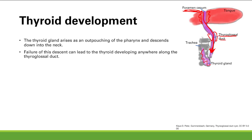The key thing about the lingual thyroid is that sometimes this can be the only thyroid tissue in the body — there's no other tissue making thyroid hormone. We often like to remove the lingual thyroid, but if it's the only source and we remove it, this patient will develop significant hypothyroidism. So if a question says a patient has symptoms of hypothyroidism after lingual thyroid removal, you know what's going on.